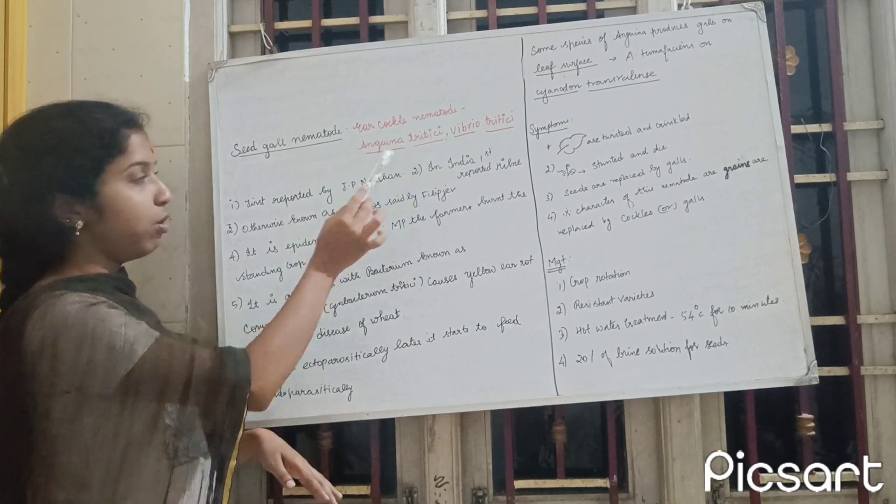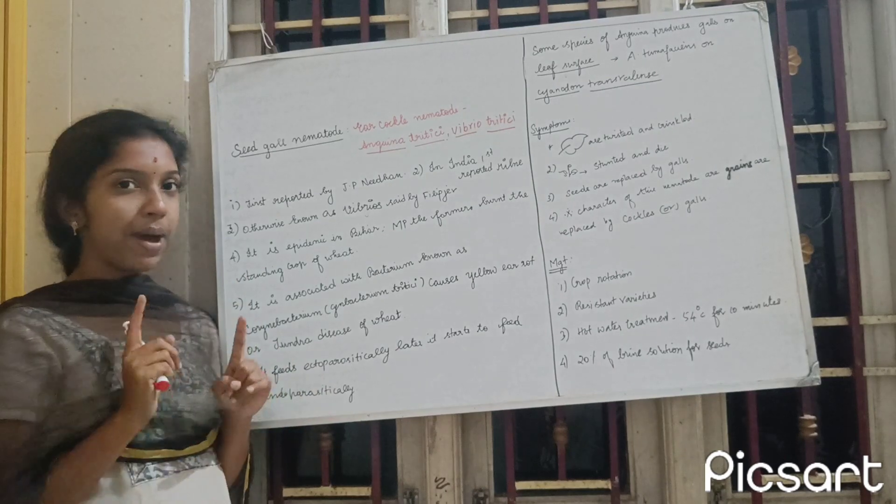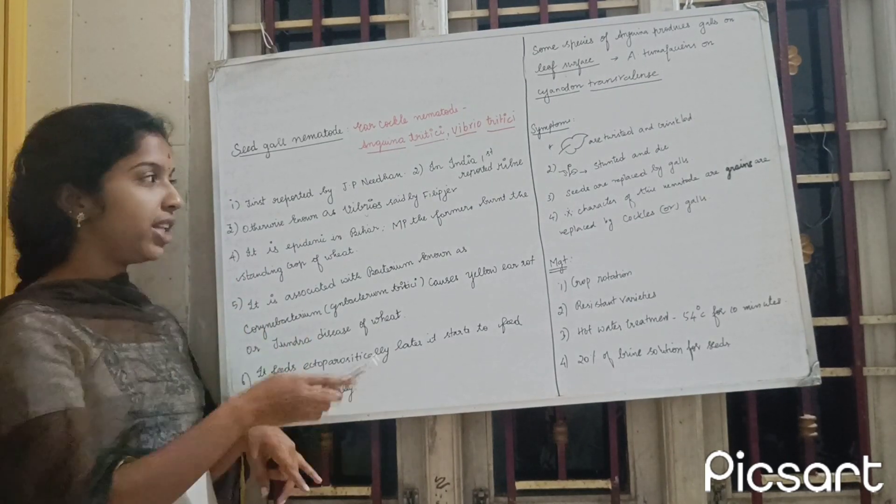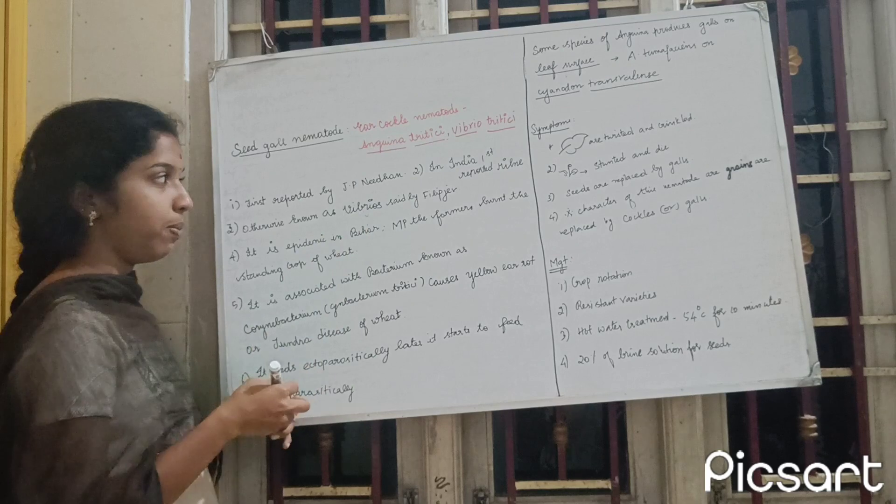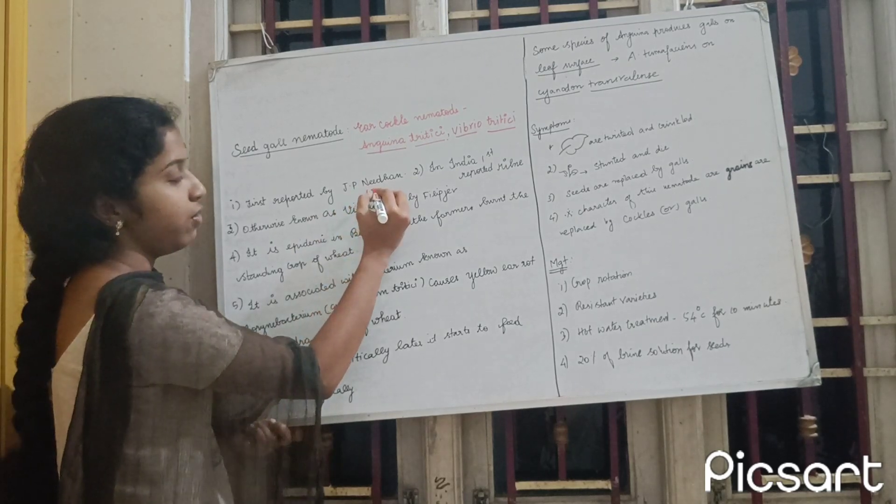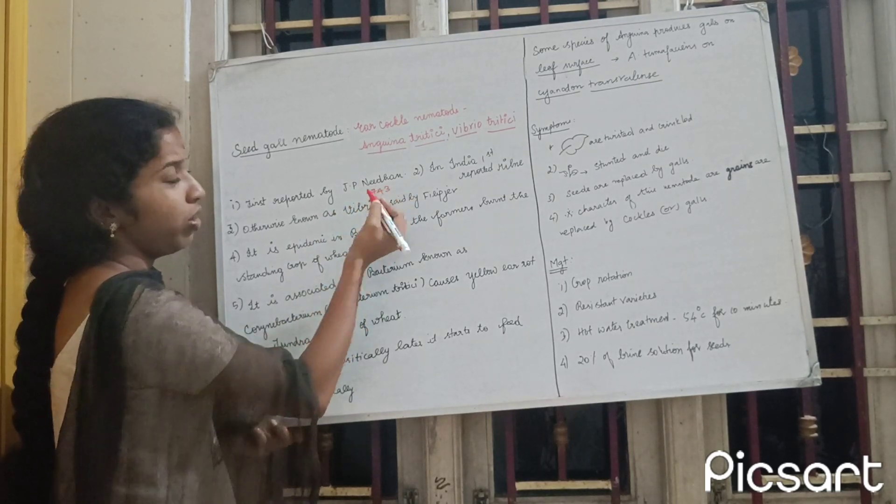Anguina tritici. So this is the first plant parasitic nematode. Who is the first name? J.P. Needham.